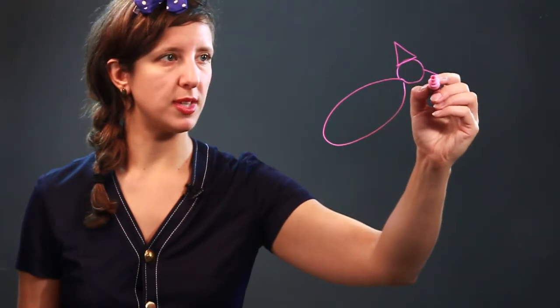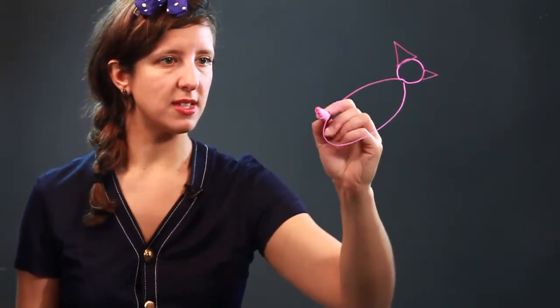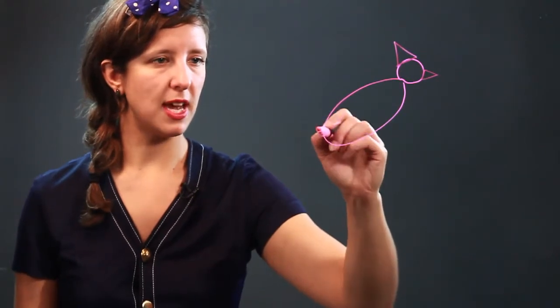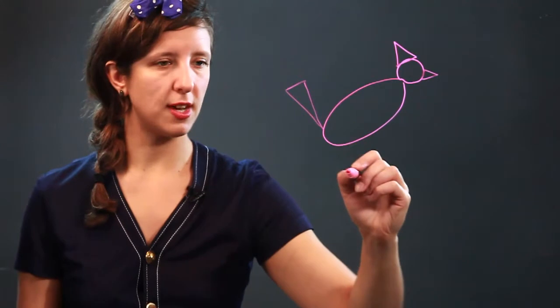And of course he has a beak, so we're going to give him another triangle for the beak. And then he has this lovely tail that sticks out, so we're going to use another triangle for his tail.